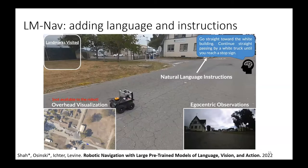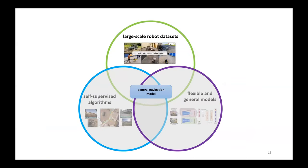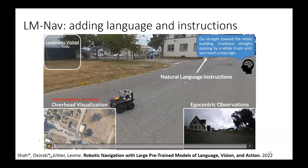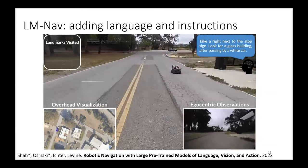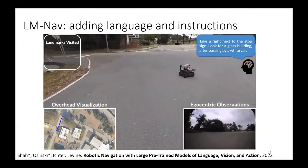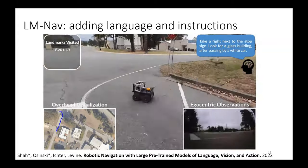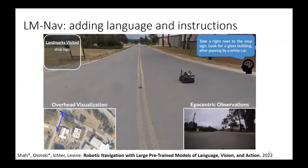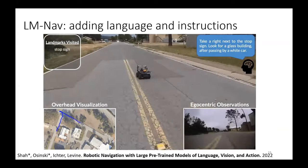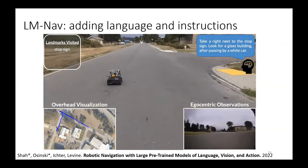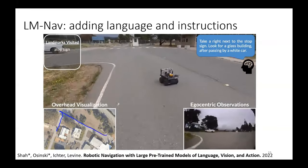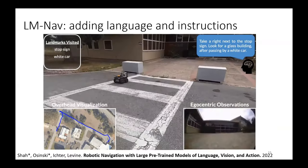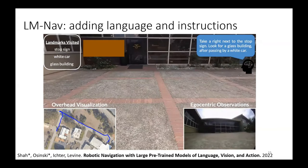You can do stuff like tell it to go straight towards the white building, then right to the stop sign, look for a glass building and a car — and the robot will decode that into a path through the environment. Here it goes to the stop sign, takes a look at the stop sign, then goes to the white car, and then goes to the glass building. The point is that once you train one of these goal-conditioned models, it's not just for doing goal images. You can weld a front end to it — in this case with language, or with other things — and use it to perform a variety of tasks.